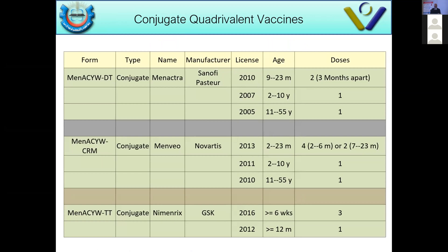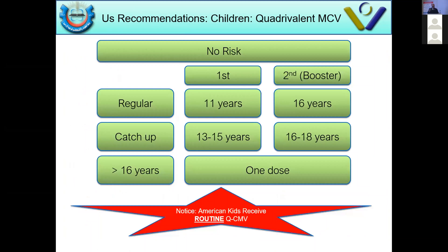In the United States, the ACIP recommendation for the general population is two shots: one at 11 years and another at 16 years, just before entering college. Catch-up vaccination is between 13–15 years or 16–18 years. If the dose before 16 years is missed, one dose after 16 years of age is given.